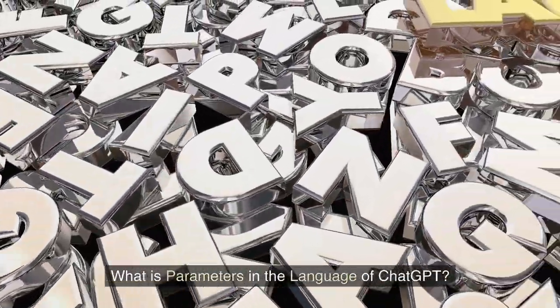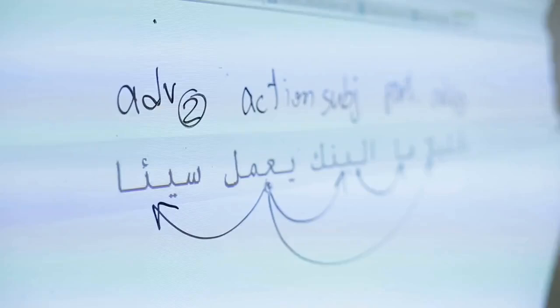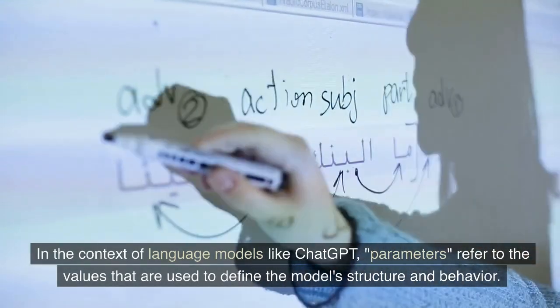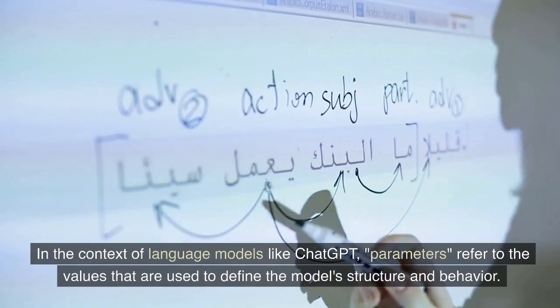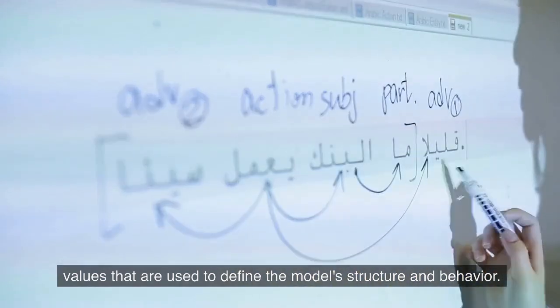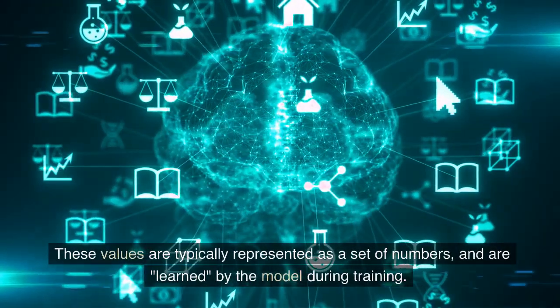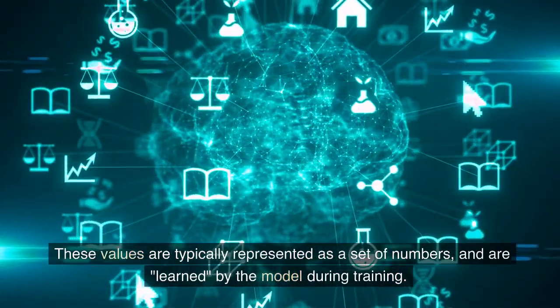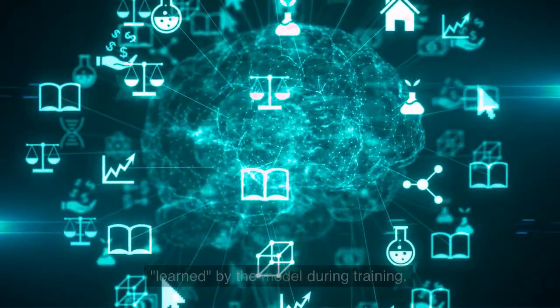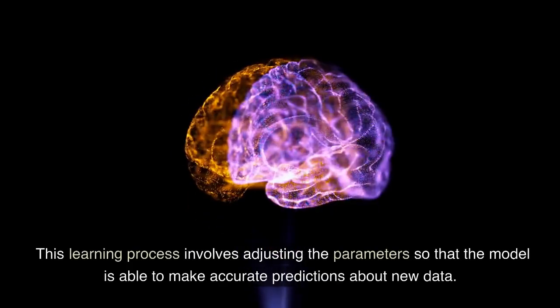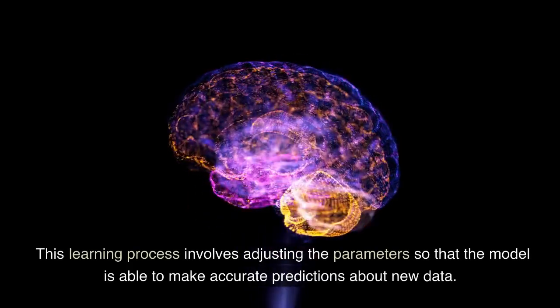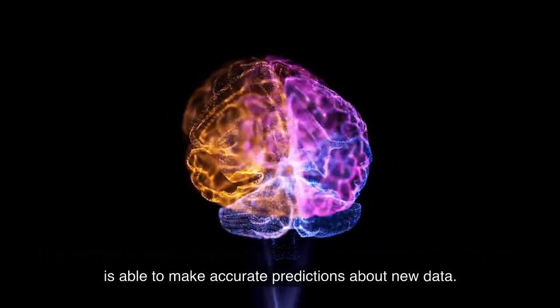What is parameters in the language of ChatGPT? In the context of language models like ChatGPT, parameters refer to the values that are used to define the model's structure and behavior. These values are typically represented as a set of numbers and are learned by the model during training. This learning process involves adjusting the parameters so that the model is able to make accurate predictions about new data.